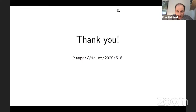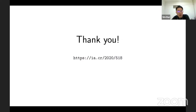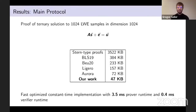Thank you, Gregor. Any questions? So what LWE problem do you use there — is it structured like a module? Since our proof system really works with vectors over Z_q with no polynomial structure whatsoever, this can be a general LWE equation. But of course this contains the case where the matrix encodes polynomial products, making it a ring LWE or module LWE equation. It works for the general case.